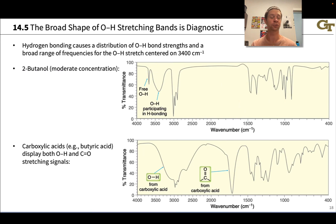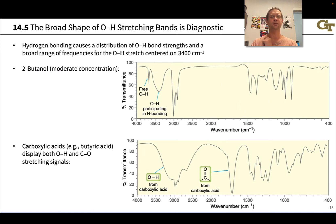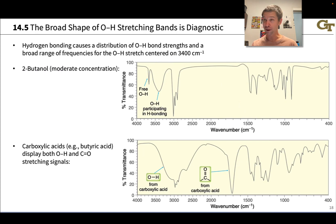Hydrogen bonding is particularly common in alcohols and related structures containing a hydroxyl group. It causes a distribution of O-H bond strengths, since a stronger hydrogen bond may actually weaken the O-H bond — but this occurs to different degrees because there are different distances between hydrogen bonding atoms throughout the Avogadro's number worth of molecules in the sample. On the other hand, an O-H group that is not hydrogen bonding will display a typical sharp-looking signal.